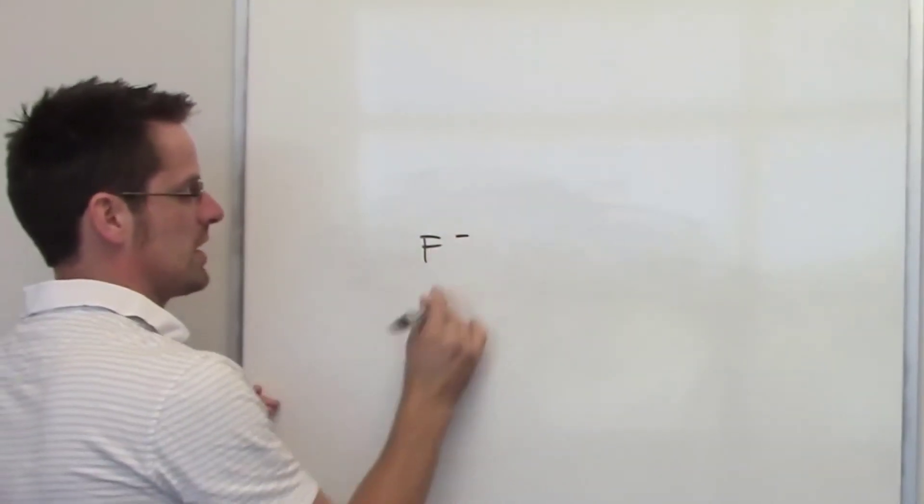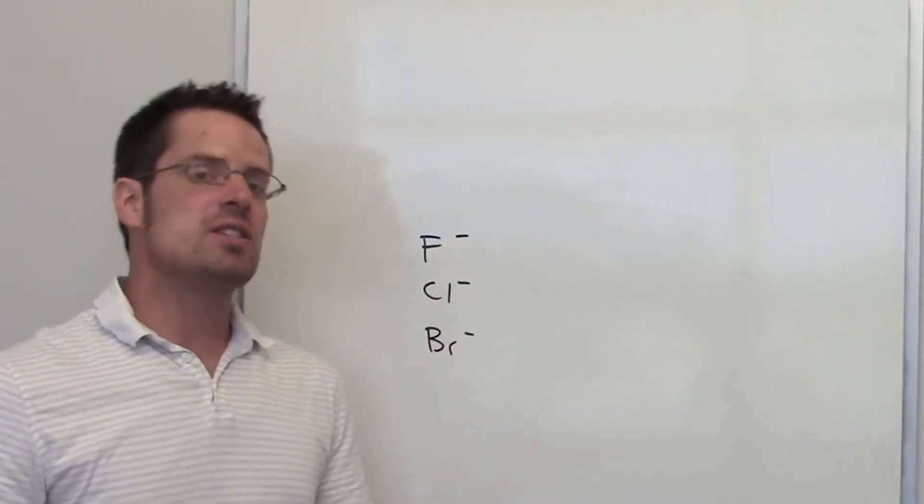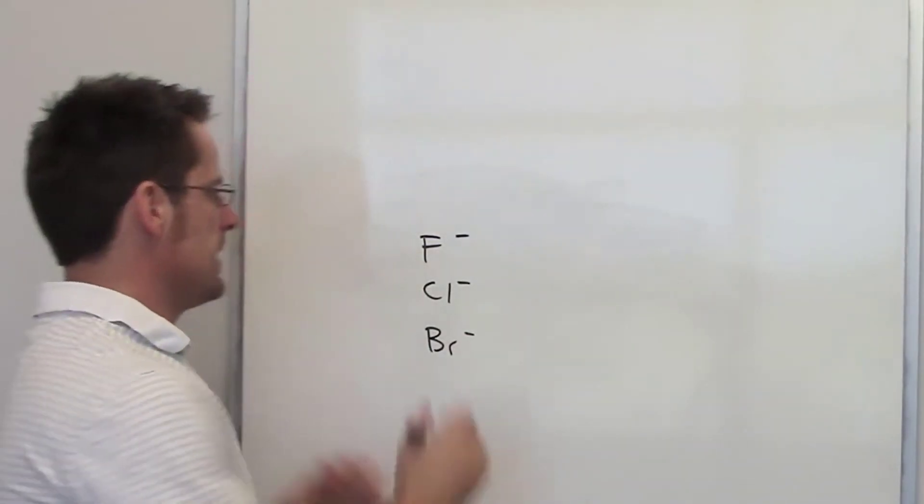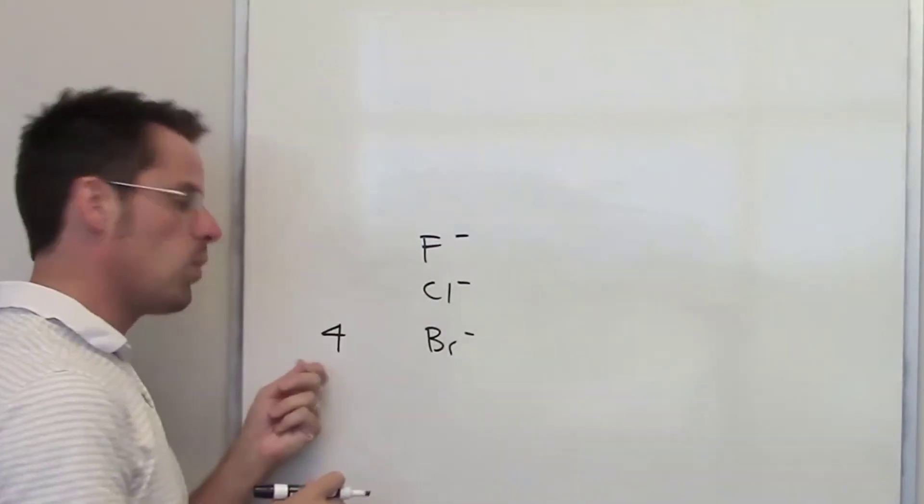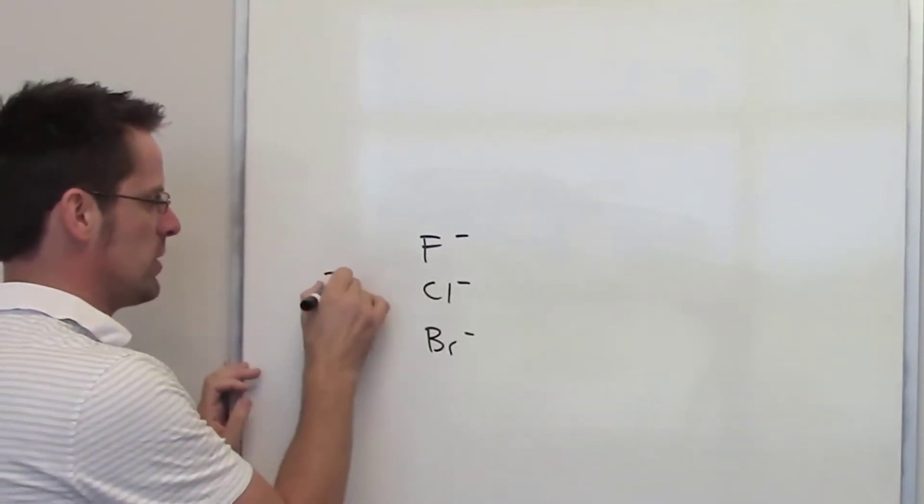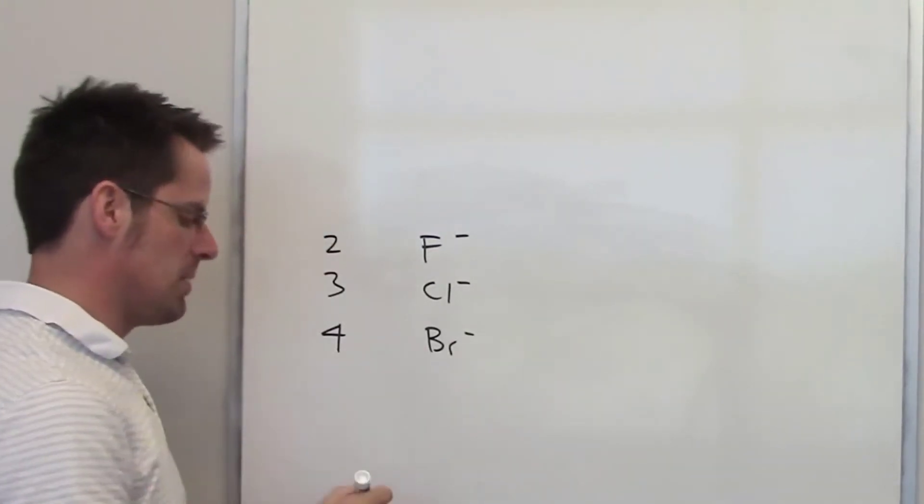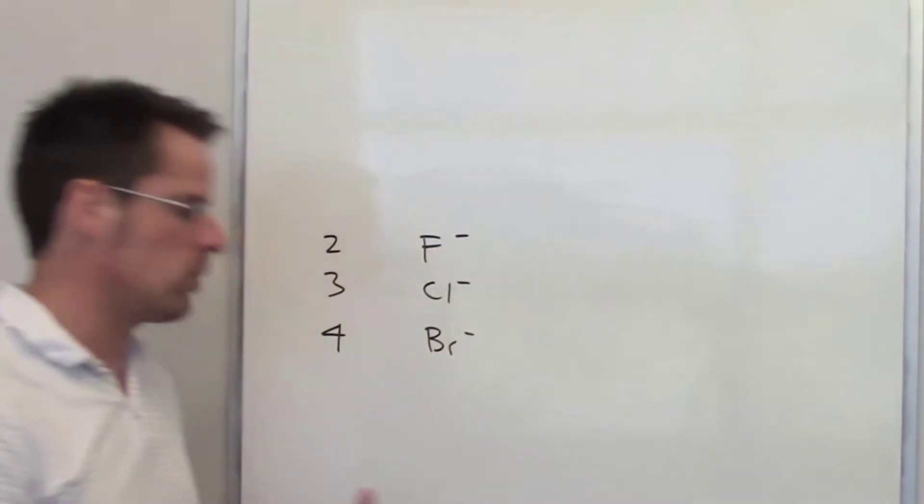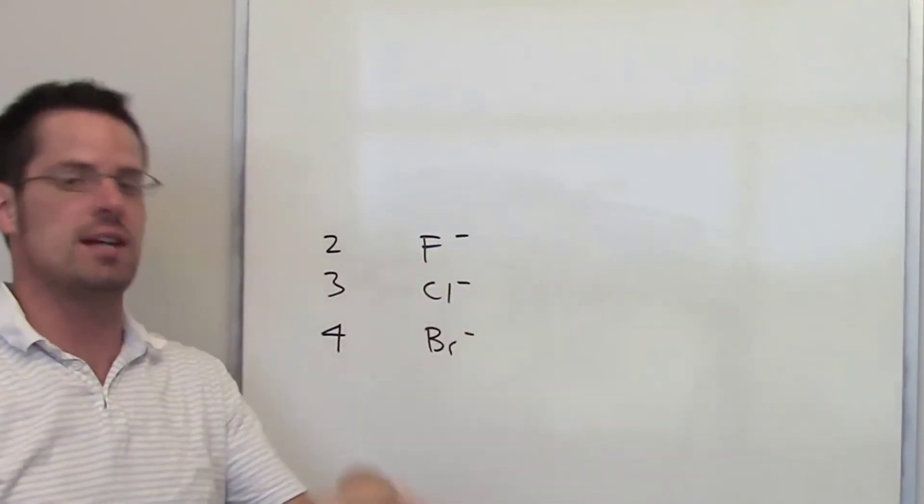In this last question, we're asked to compare fluoride with chloride with bromide. For the same reasons I discussed in an earlier video, bromine's outermost electrons are in a much larger 4 energy level, while chlorine's are in a 3 energy level and fluorine's are in a 2 energy level. That means that bromine's outermost orbitals are going to be much larger in size than chlorine's, which will be larger in size than fluorine's.